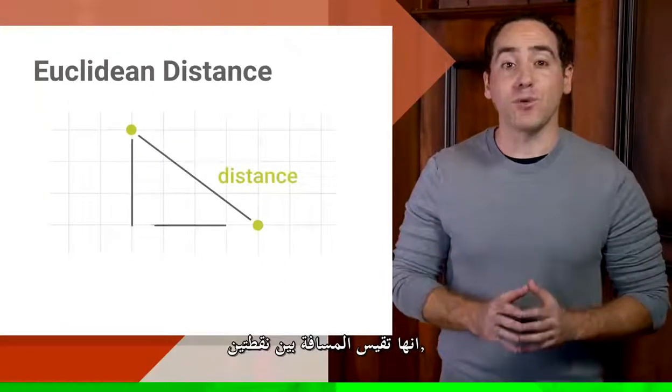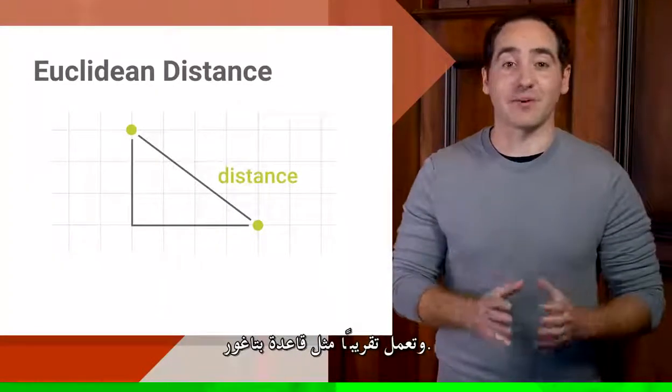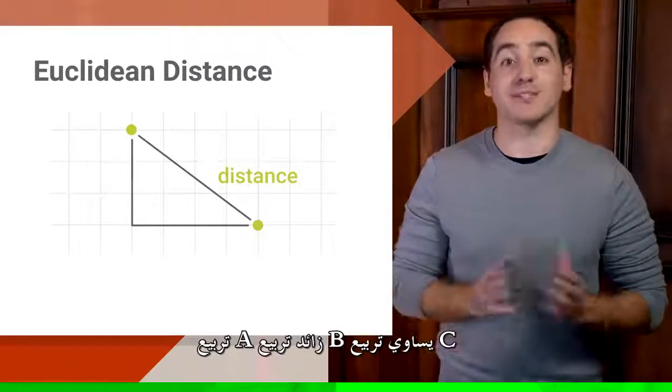It measures the distance between two points, and it works a bit like the Pythagorean theorem. a squared plus b squared equals c squared.